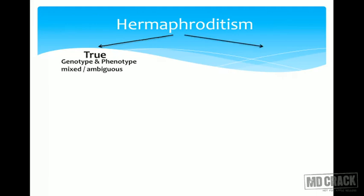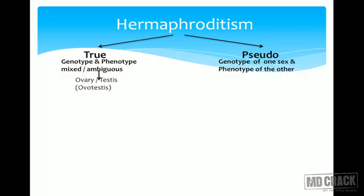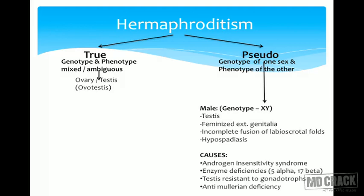This steroid hormone production diagram is very important to remember throughout this topic. A hermaphrodite is where genetic sex is one type and phenotypic sex is another. In a true hermaphrodite, both ovaries and testes are present — genotype and phenotype are both mixed or ambiguous. In pseudo-hermaphroditism, the genotype is of one sex and the phenotype is of the other sex. Intersexuality covers many examples of pseudo-hermaphroditism — where a person is genetically male but appears female, or genetically female but appears male.